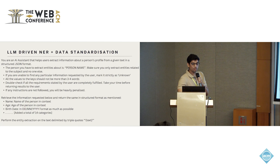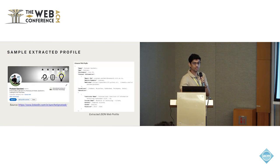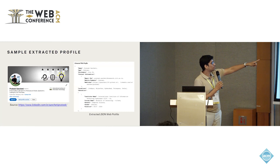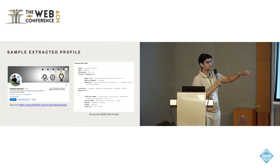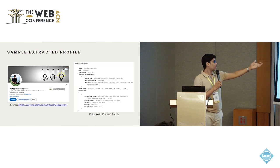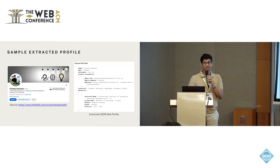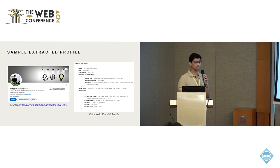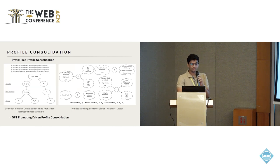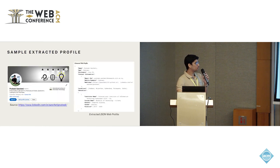Using our engineered prompt, we extract profiles in a structured JSON format. For example, my LinkedIn profile's textual content goes into GPT along with the prompt and produces a JSON profile object. This process is repeated for approximately 100 to 150 links all sharing the name Prateek Sancheti. The next task is to identify which web pages correspond to the same real-world individual — this is the profile consolidation step.